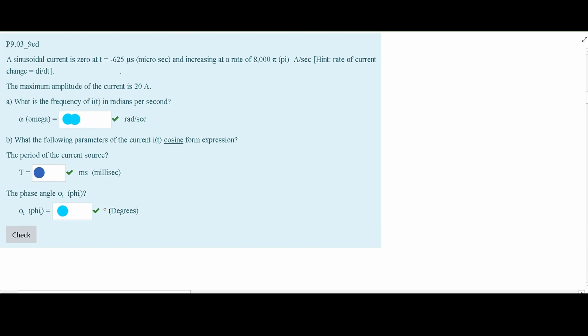So to start this off, we are going to start with the following formula, and this can be found in the notes linked below the like button in the description. And for this, we are going to look at the hint, and that's that the rate of current change is di dt.